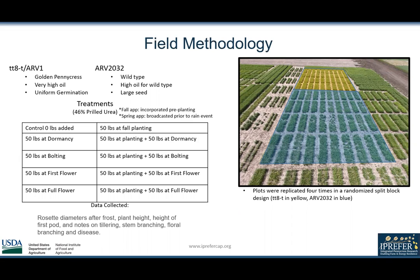There were nine treatments split up between spring and fall timings and a control. The fall application consisted of 50 pounds of nitrogen incorporated prior to planting, and spring applications consisted of 50 pounds of nitrogen broadcasted prior to a rain event at four different stages of plant development.